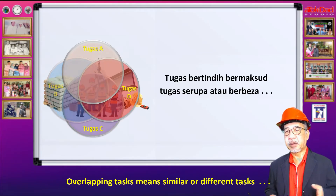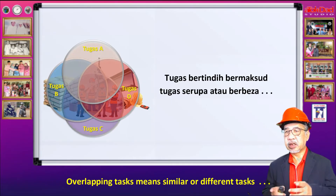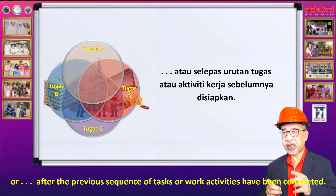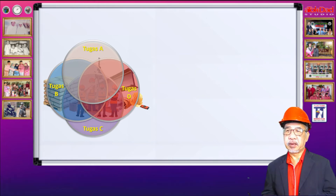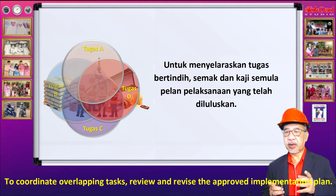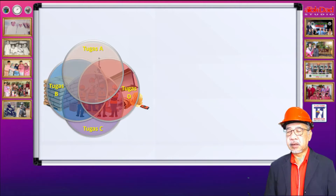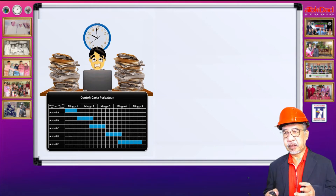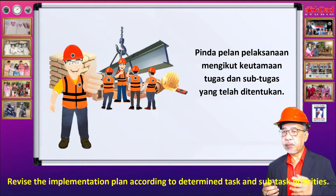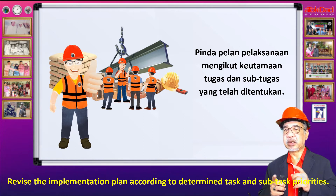Tugas bertindih bermaksud tugas yang serupa atau berbeza, tetapi perlu dilakukan di lokasi dan atau pada masa yang sama, atau selepas beberapa tugas dan aktiviti kerja sebelumnya disiapkan. Untuk menyelaraskan tugas bertindih, semak dan kaji semula pelan pelaksanaan yang telah diluluskan. Semak senarai tugas utama dan sub-tugas. Tentukan keutamaan supaya ia selari dengan objektif yang ditetapkan. Pindah pelaksanaan sekiranya perlu, mengikut keutamaan tugas dan sub-tugas yang telah ditentukan.